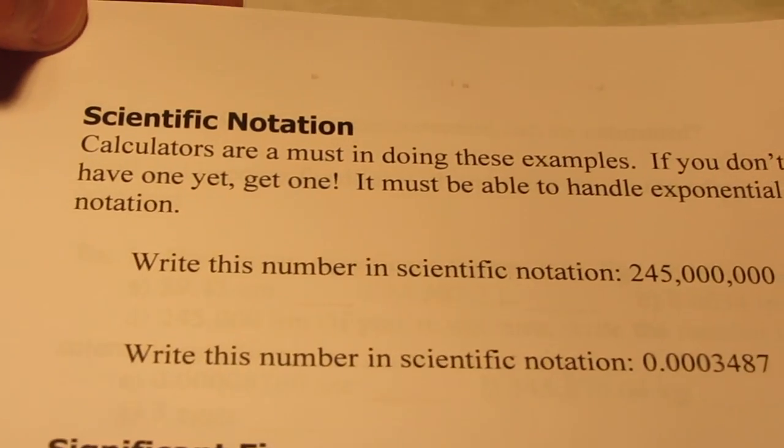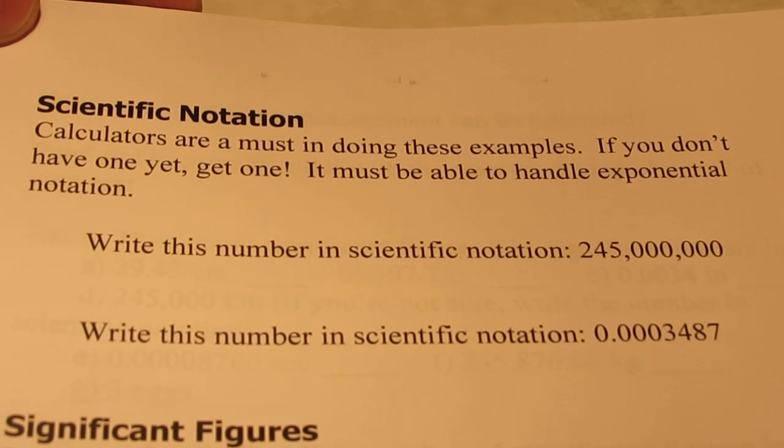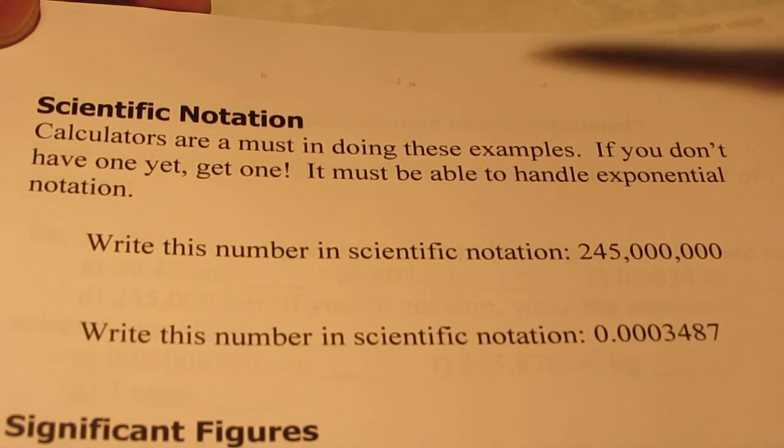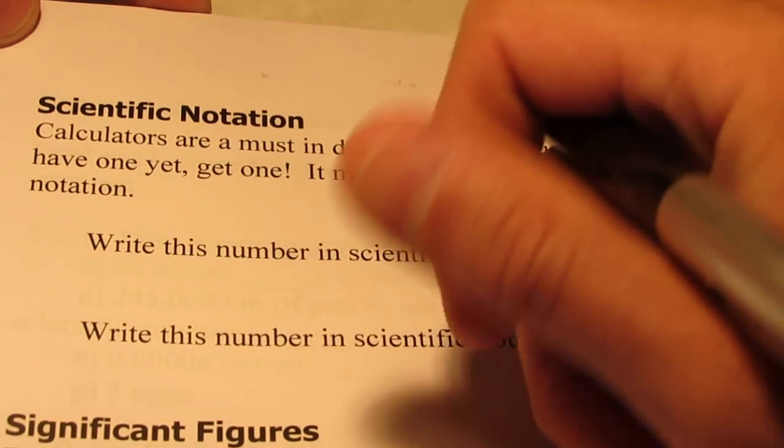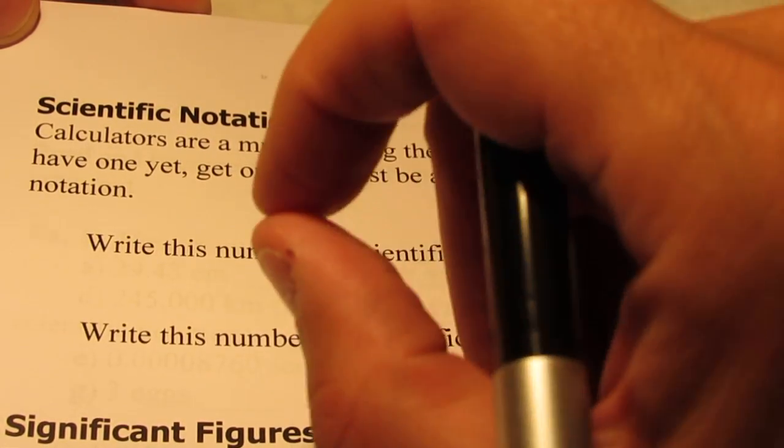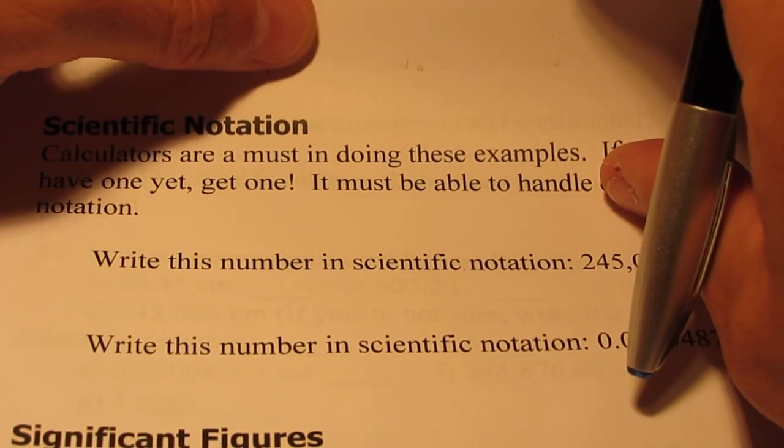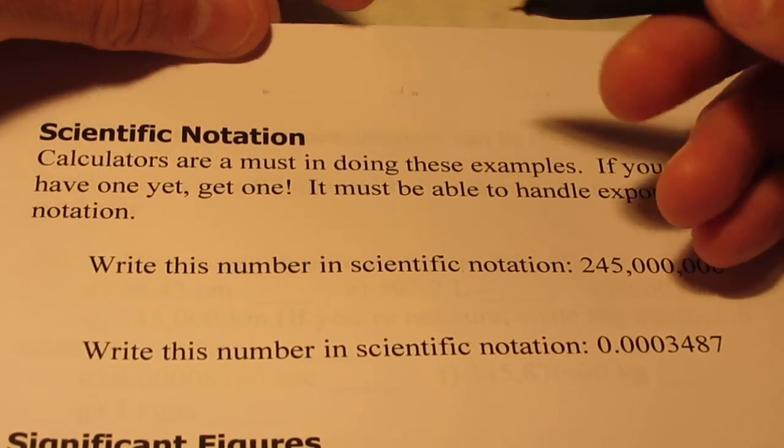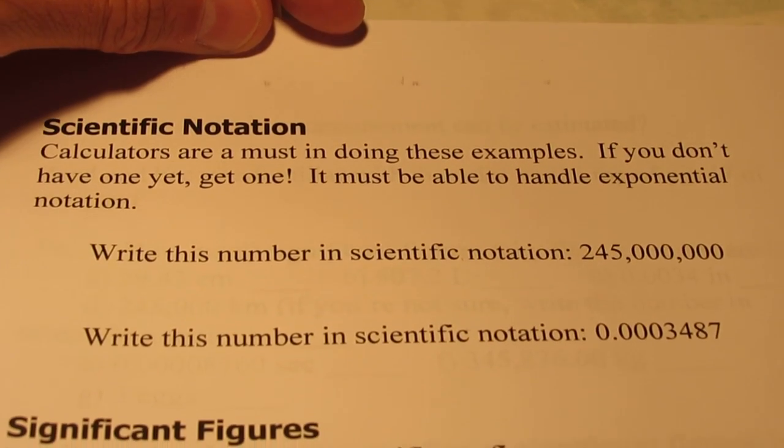So first let's talk quickly, and this should just be a review of scientific notation and how to express numbers in scientific notation. Sometimes we use really large numbers in science, and sometimes we use really tiny numbers in science, so it becomes easier to express those values in scientific notation form, rather than writing out the entire number.